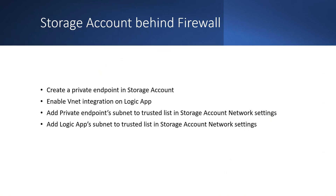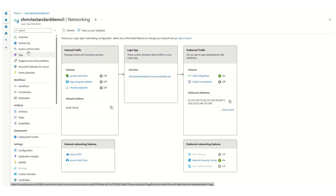When a storage account is behind a firewall and in a different region than the Logic App, we can whitelist the Logic App's outgoing IPs to access the storage account. But when the storage account is in the same region as the Logic App and is behind the firewall, local communication in the data center abstracts these internal IP addresses — so permitting traffic through IP addresses alone might not be enough. In that case, we would have to use private endpoints. The steps are: create a private endpoint for the table service, enable VNet integration on the Logic App, add the private endpoint's subnet to the trusted list in storage account network settings, and also add the Logic App's subnet to the trusted list.